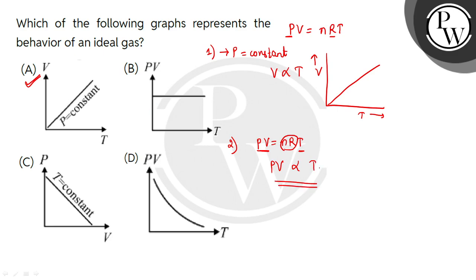If I increase my temperature, PV should increase. The product of P and V should also increase, not remain constant. This is the wrong representation. So option B is incorrect.